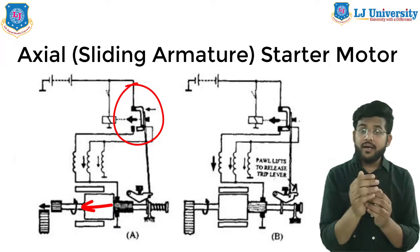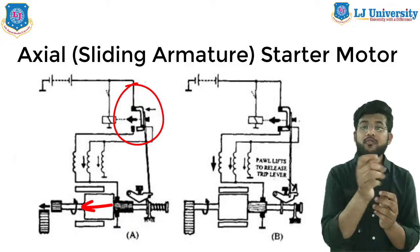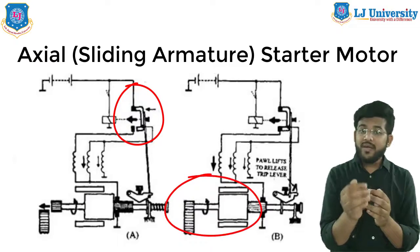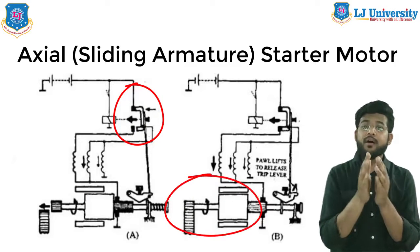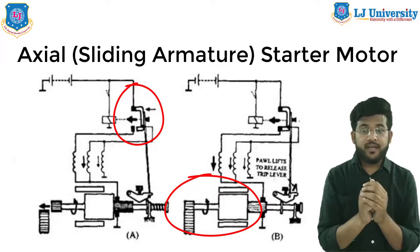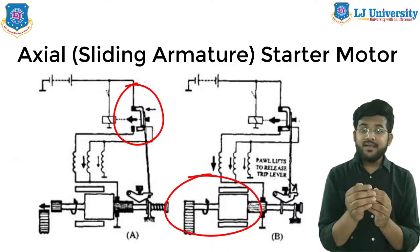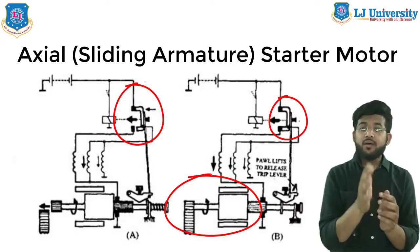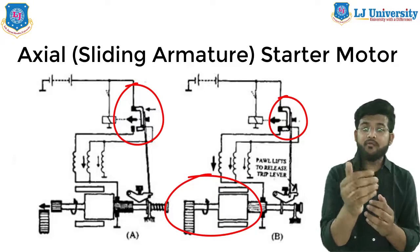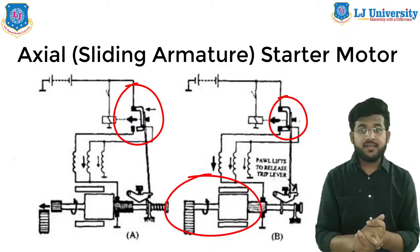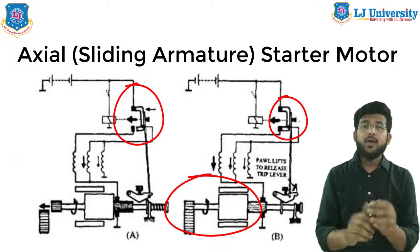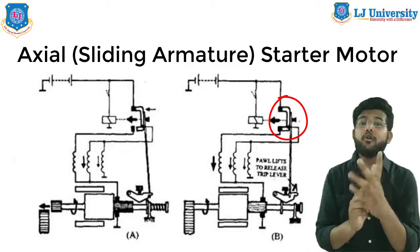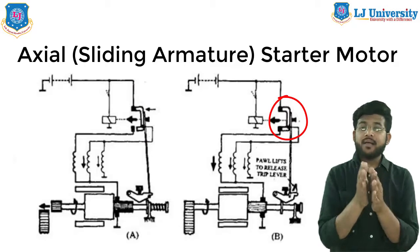The armature rotates slowly and moves axially so that it is central to the field poles. Simultaneously the pinion slowly slides into mesh with the ring gear. When the pinion is on the verge of full engagement, the release disc on the armature strikes the pole so that the trip lever closes the second pair of contacts. This is shown in the second figure. Now current passes through the main winding, causing the motor to develop its full torque.